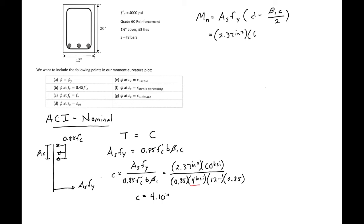Our fy is 60 ksi. Our d is 17.6 inches. And our beta1c, so this is 0.85 times 4.1 over 2. We can find our Mn will be equal to 2,259 kip-inches.